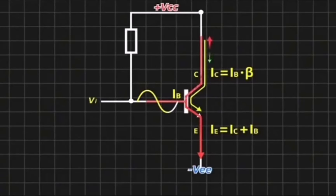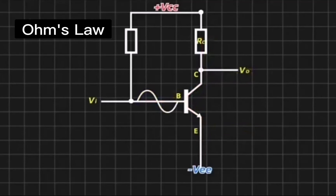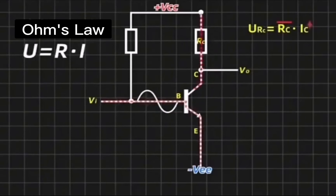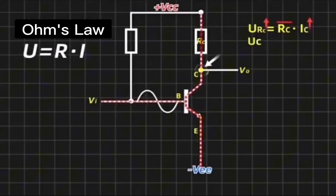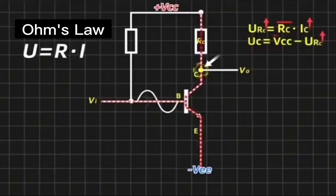If the load is connected to the collector, according to Ohm's law, the voltage is equal to the resistance multiplied by the current. The resistor value remains unchanged. As the current increases, the voltage across the resistor increases. The voltage at the collector is equal to the power supply voltage minus the resistor voltage. Since the power supply voltage remains unchanged, the voltage at this point decreases.